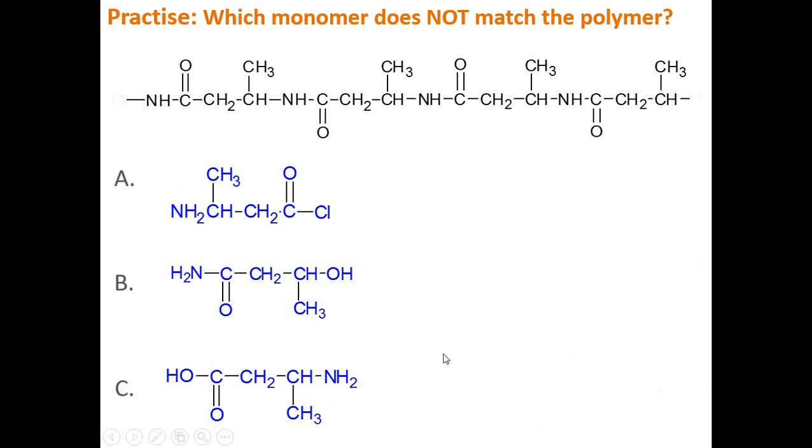So let's look at this polymer and see which one of these monomers do not match the polymer. In other words, which one won't be able to be used to make the polymer. So the best way is, again, you look for those peptide links and break it between the carbonyl and the N.